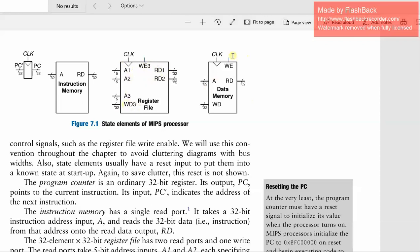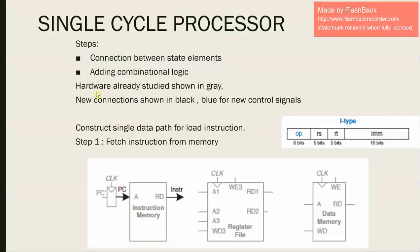For data memory, there is also a write enable pin, a read pin, a write pin, and an A pin. If the write enable is 1, writing of data takes place to the address loaded in the A pin. If the write enable is 0, reading of the value present at the 32-bit address A is done. These are the four state elements of MIPS.